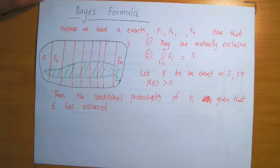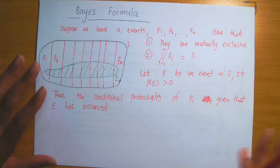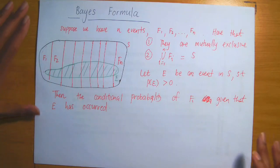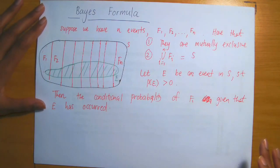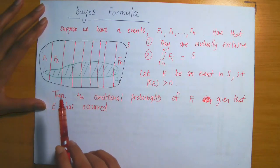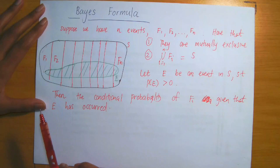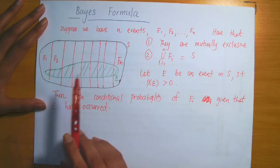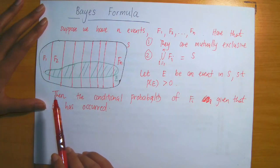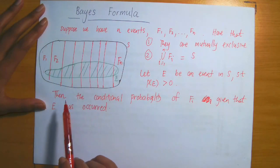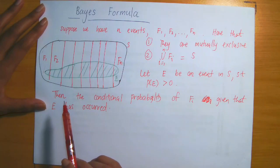Bayes' formula is a formula related to a two-stage experiment, and it describes the probability of some event occurring based on prior knowledge of other conditions that may be related to the event.